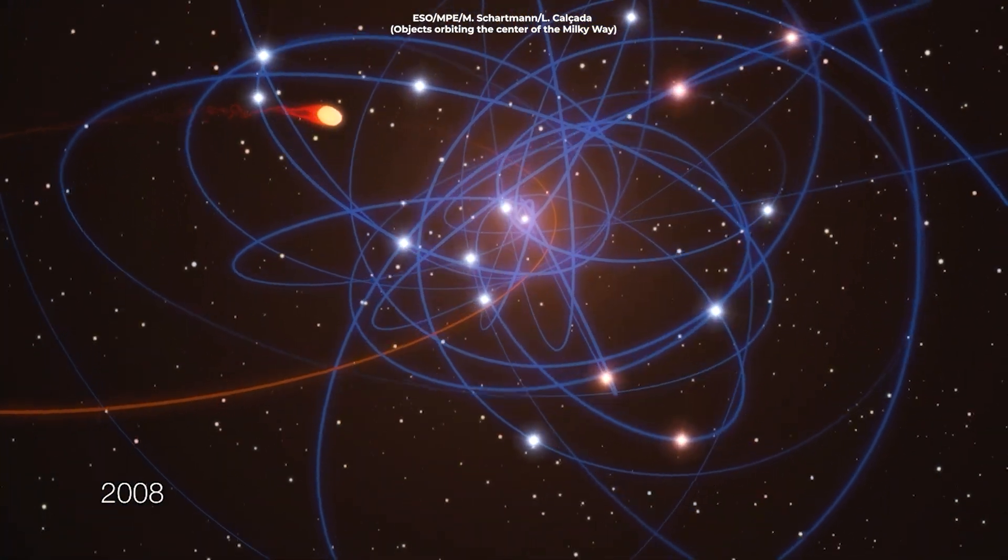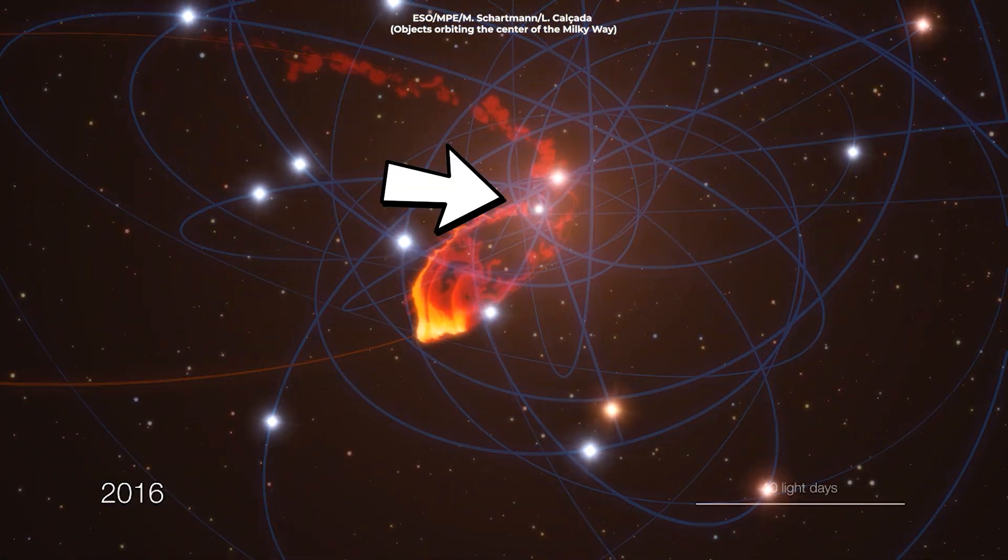What could swallow millions of suns and still keep growing? This is Phoenix A-Star. Phoenix A-Star is the largest black hole we've ever discovered.